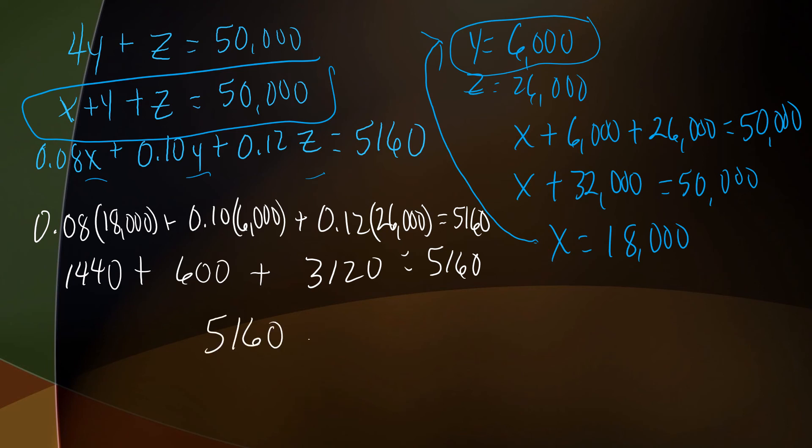So Ms. Garza, she put in $18,000 into an account earning 8%, she put in $6,000 into an account earning 10%, and she splurged a little bit and put $26,000 into an account that earned 12%. She diversified her portfolio a little bit, and in doing so, she earned $5,160 for the year. Now, these problems are worthwhile, a little bit difficult, you got to think. Math is about critical thinking.